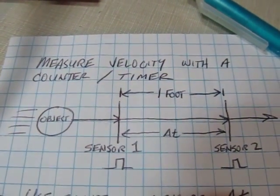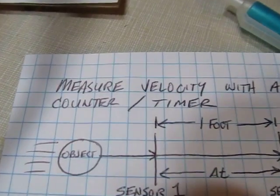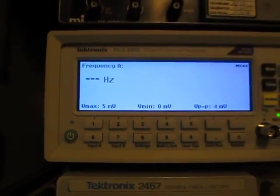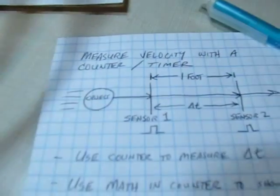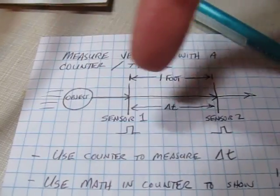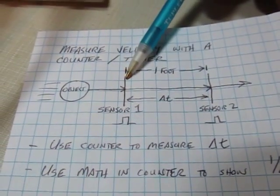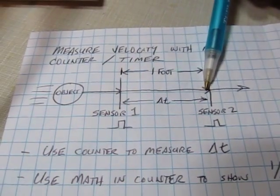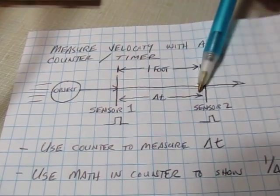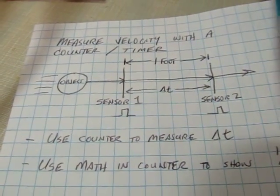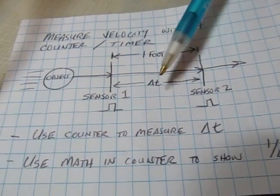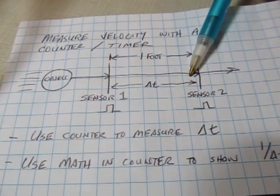Someone asked me how to use a counter timer like this one to measure the velocity of an object. Here's one way to do it: we have a moving object and a couple of sensors spaced apart by a foot. As the object passes each sensor, they put out a pulse. If you measure the time difference between sensor 1 and sensor 2, that gives you how long it takes to travel one foot.